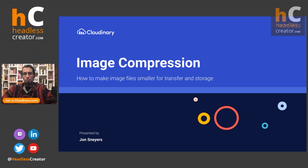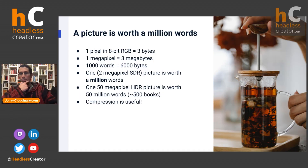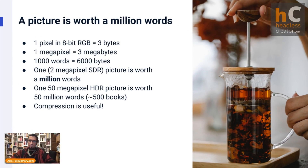Previously I've already discussed image formats at a high level. In this lesson, we'll dig into the details of compression itself. Why do we need compression? Images — sometimes people say images are worth a thousand words, but if you do the math, it's more like a million words. One pixel typically uncompressed means three bytes, so one megapixel means three megabytes. The amount of data uncompressed images use is quite a lot compared to text, and compression is very much needed to reduce the size of images.